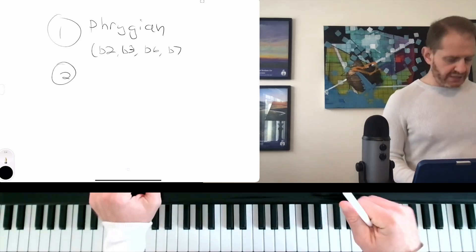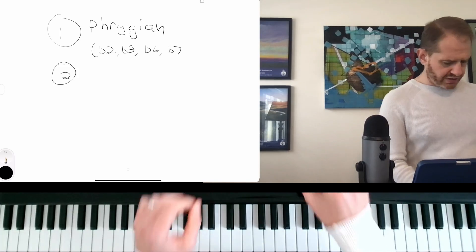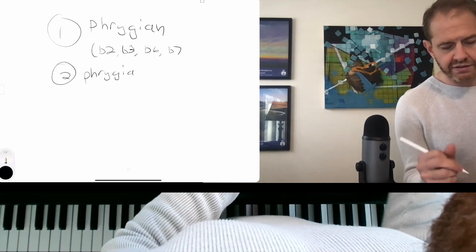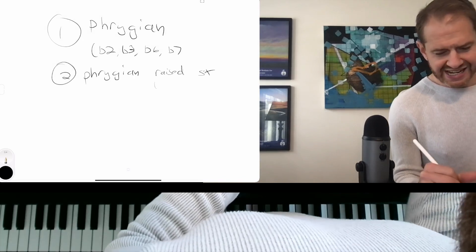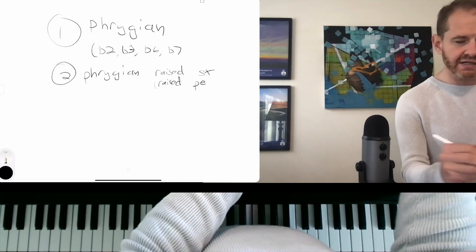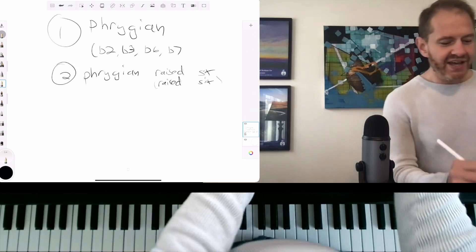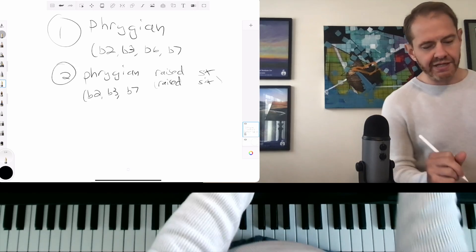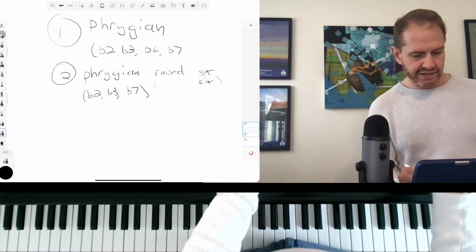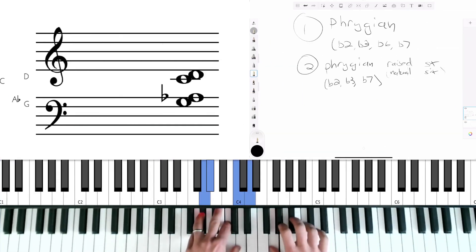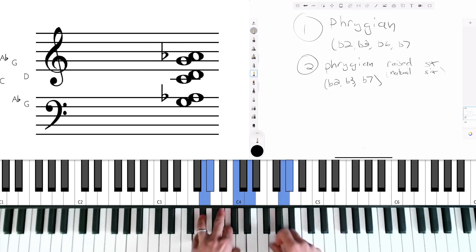Now option number two for a sus seven flat nine is Phrygian raised six, which you could name it a few different ways. So Phrygian raised six, or Phrygian natural six, it's a mode of the melodic minor. I'm alienating everybody today. You guys, you got it by the book. It's all going to make more sense when you read the book. Okay, and so this would just have flat two, flat three, and flat seven, but as you see from the name raised six, it's going to have the sixth from the major scale, so G Phrygian raised six would be... I think some people also call this Dorian flat two, because it is the same as Dorian, just with a lower second.